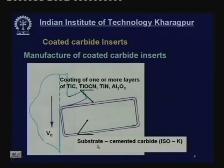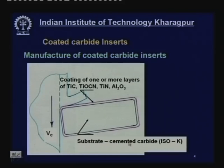This diagram shows the construction of coated carbides — a cross section of a cutting tool insert with the work piece and chip flowing out. The substrate inside is made of cemented carbide, preferably ISO K grade — a tougher grade having less gamma phase. On top of the substrate is a fine coating of material such as titanium carbide, titanium oxy-carbonitride, or titanium nitride alumina.